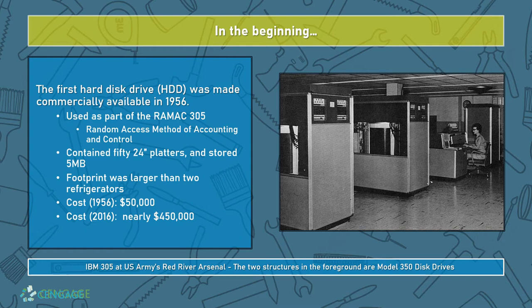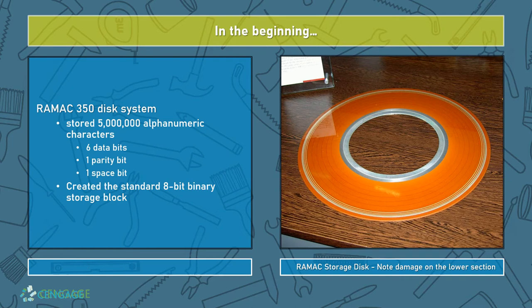The footprint was larger than two refrigerators. You'll see in the graphic that these are the Model 350 clusters. In 1956, this cost nearly $50,000, and in 2016 dollars for inflation, would adjust to almost half a million. One of the RAMAC storage disks stores 5 million alphanumeric characters — that's where we get the original megabyte. Six data bits, one parity bit, and one space bit created the standard 8-bit binary storage block.